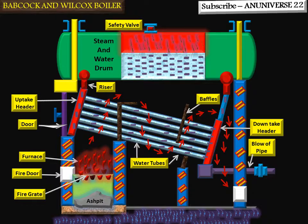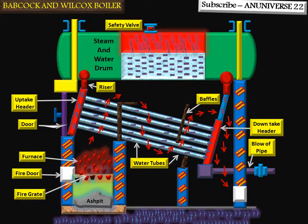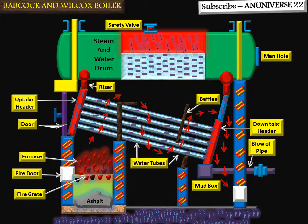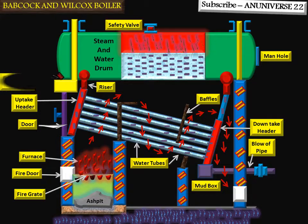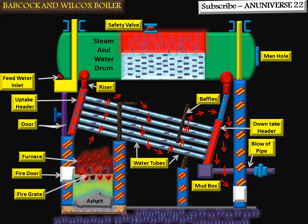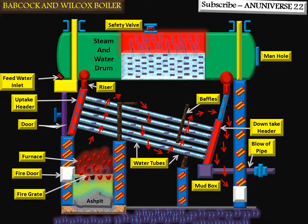This is the blow-off cock. The main function of the blow-off cock is to empty the boiler if required and discharge the mud and scale accumulated at the bottom of the boiler. The manhole provides an opening through which a man can enter the boiler for cleaning and inspection purposes. The feed check valve allows feed water under pressure to pass into the boiler and prevents water from escaping back in the event of failure of the feed pump.